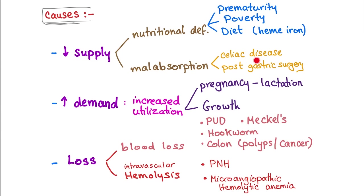Malabsorption causes include celiac disease or post-gastric surgery. For increased demand: pregnancy — the lady is feeding two bodies and needs more iron. Also lactation, same concept. Growth — needing more iron because new cells are being built.